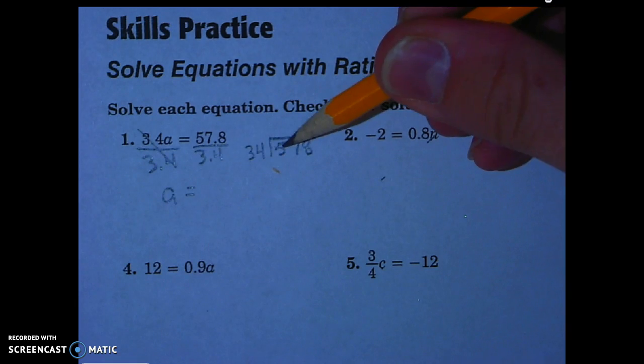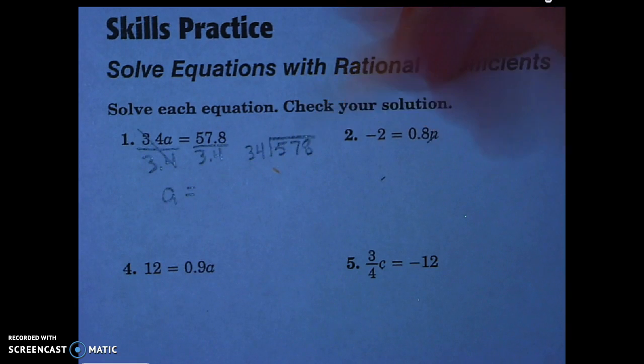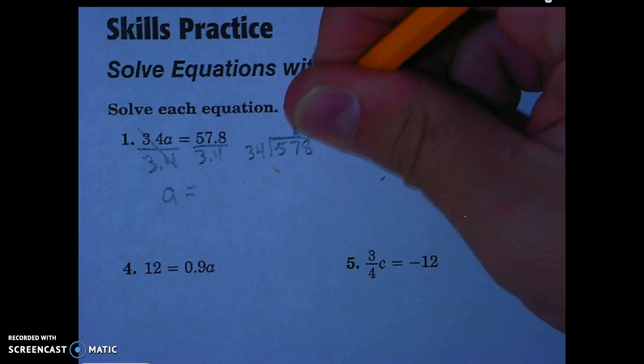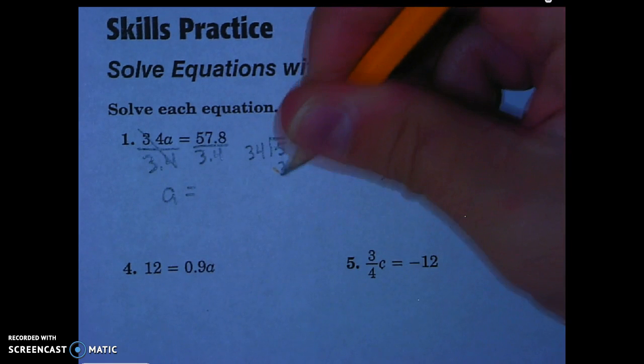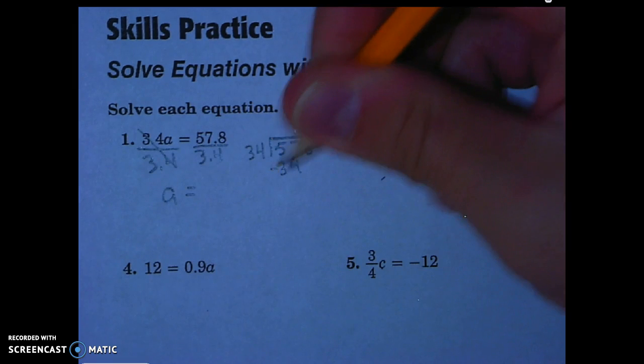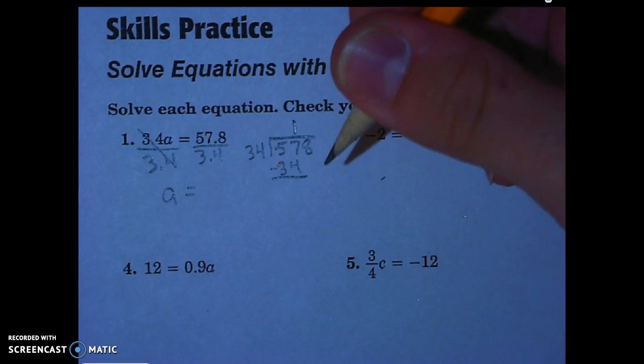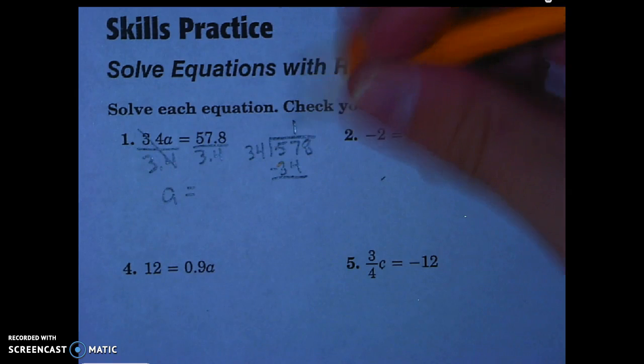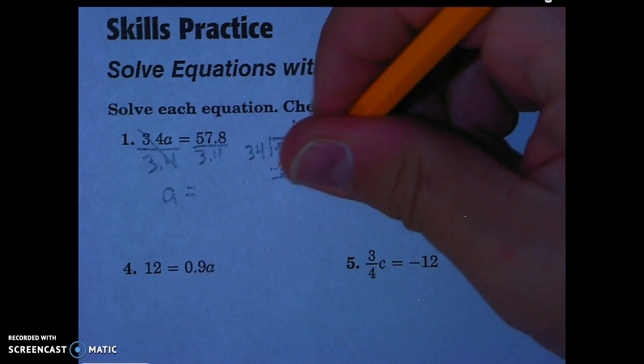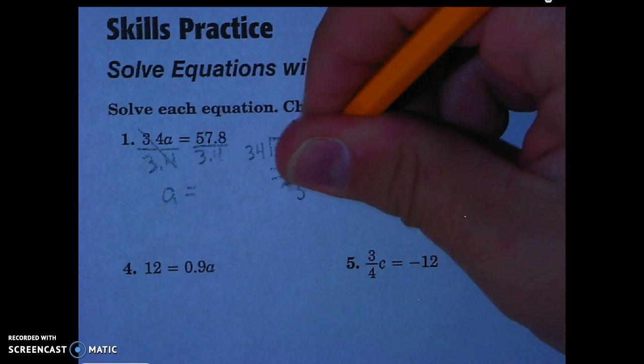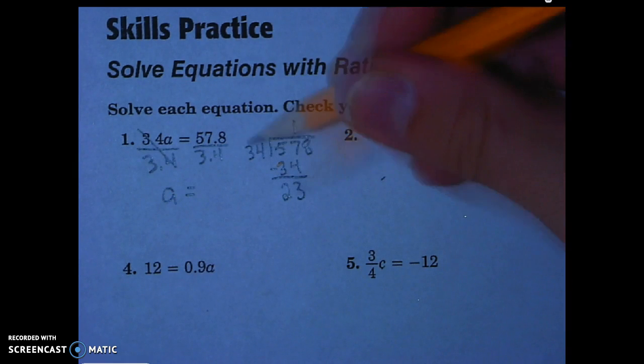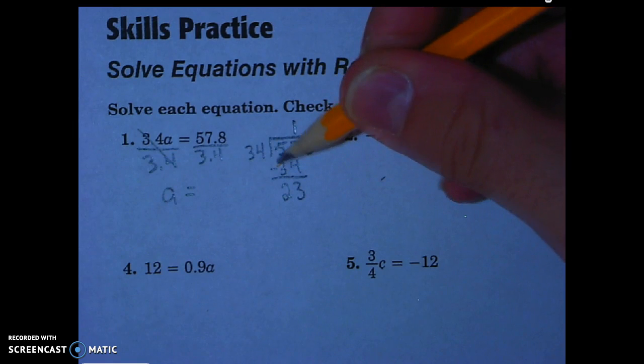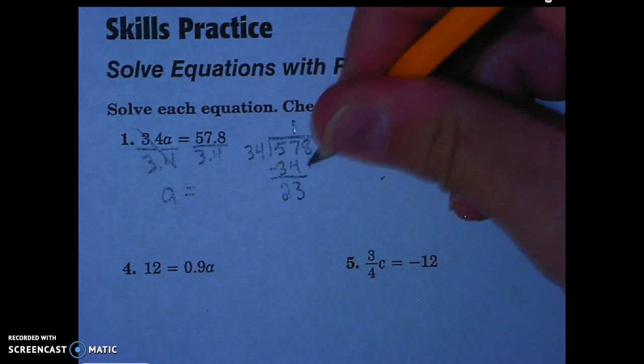34 will not go into 5, but it will go into 57 one time. 34 times 1 is 34. I'm going to do my subtraction here. 7 minus 4 is 3, 5 minus 3 is 2. And so now 34 will not go into 23, so I know I've gotten a big enough number here. I'm going to go ahead and drop my 8.